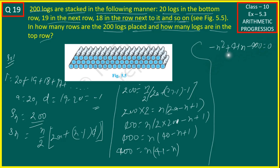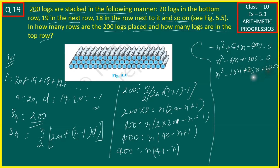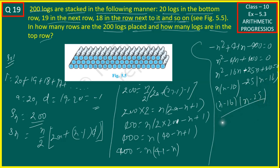This equation gives us N squared minus 41N plus 400 equals 0. Factoring: N(N minus 16) minus 25(N minus 16) equals 0, so (N minus 16)(N minus 25) equals 0. Therefore N equals 16 or N equals 25.